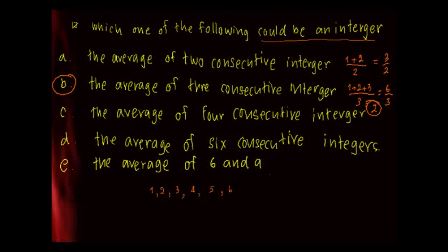Let's try C. If you want to try C, it's going to be four consecutive integers, right? Going to be 1 plus 2 plus 3 plus 4 divided by 4.